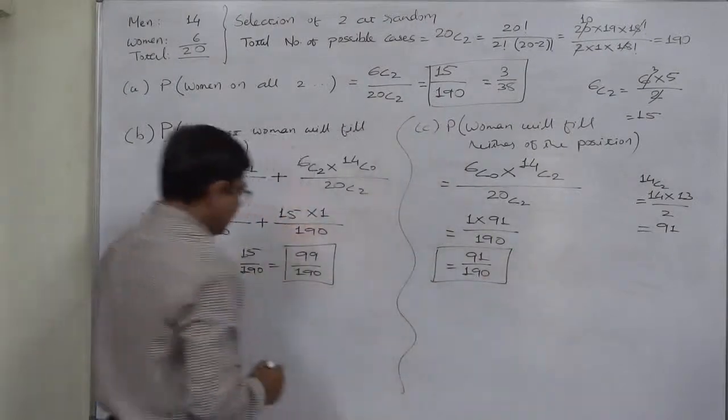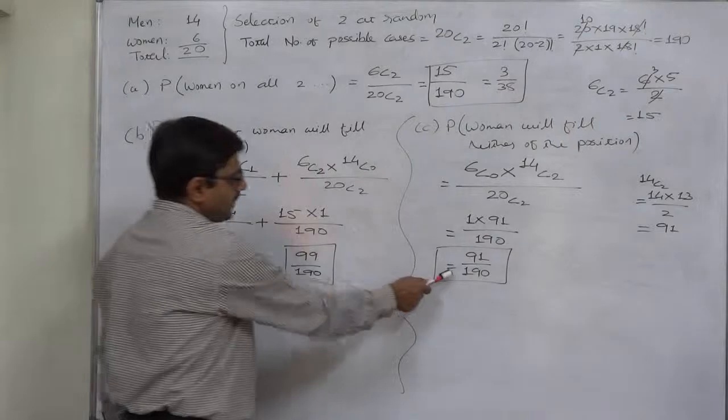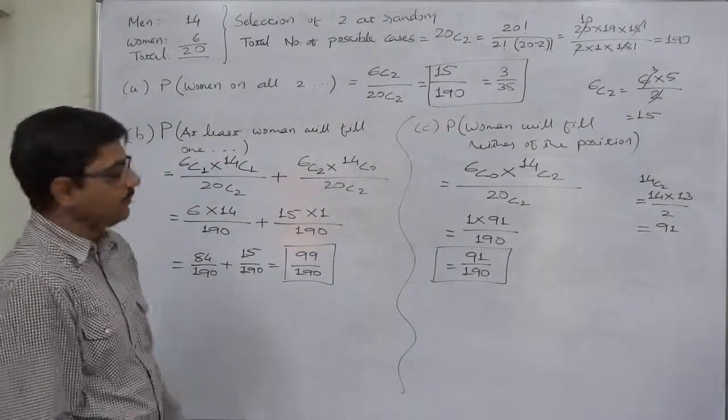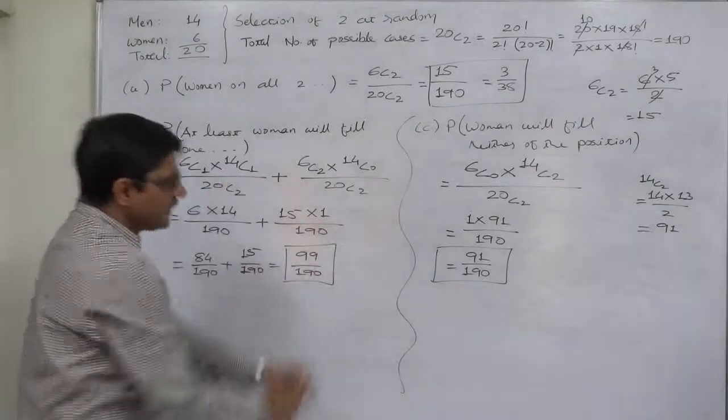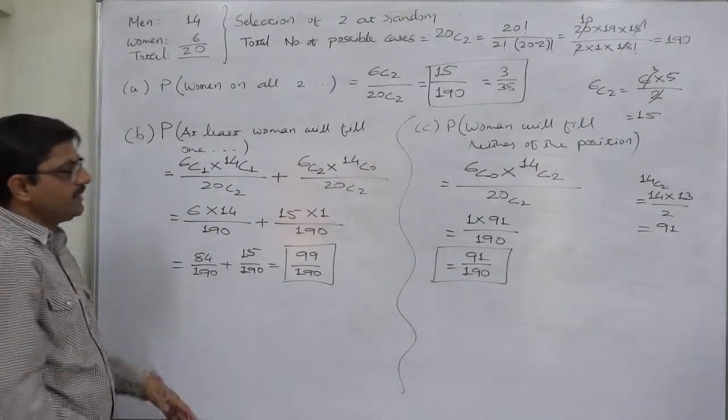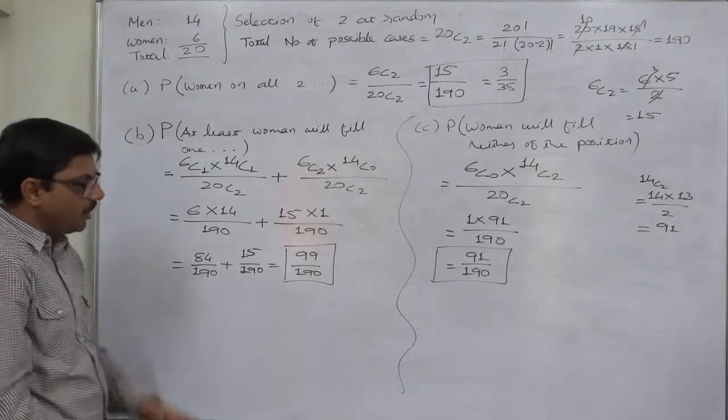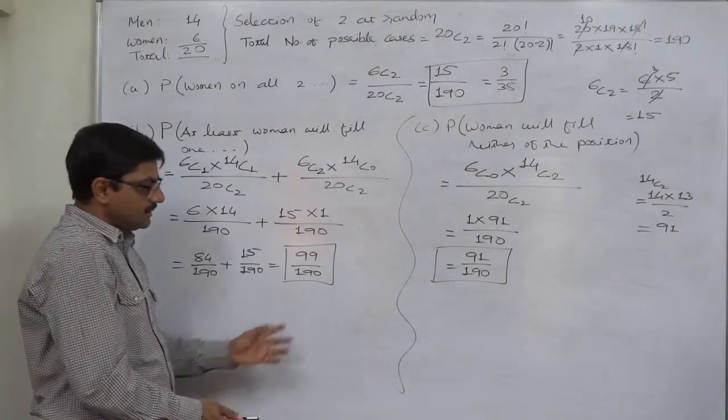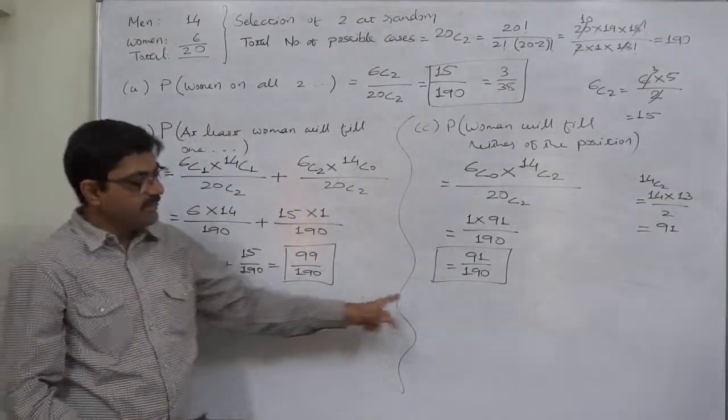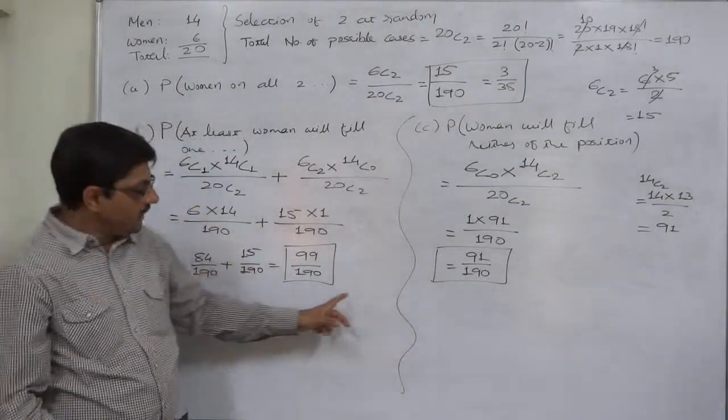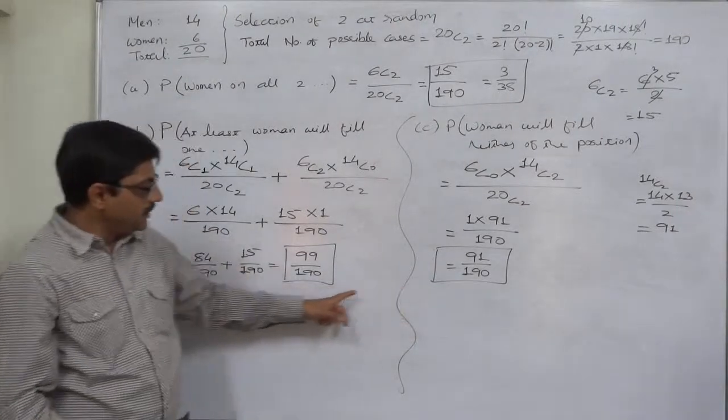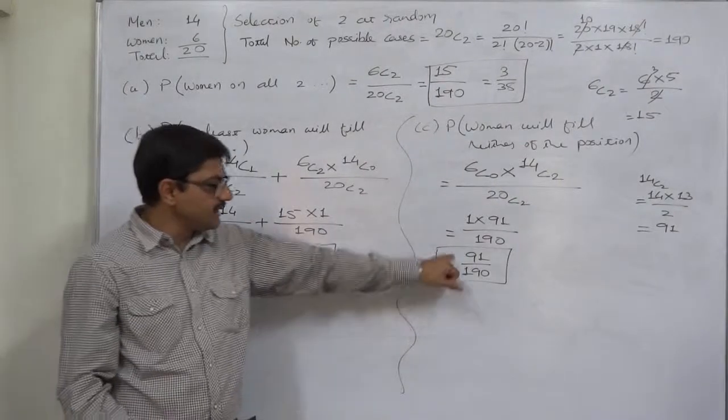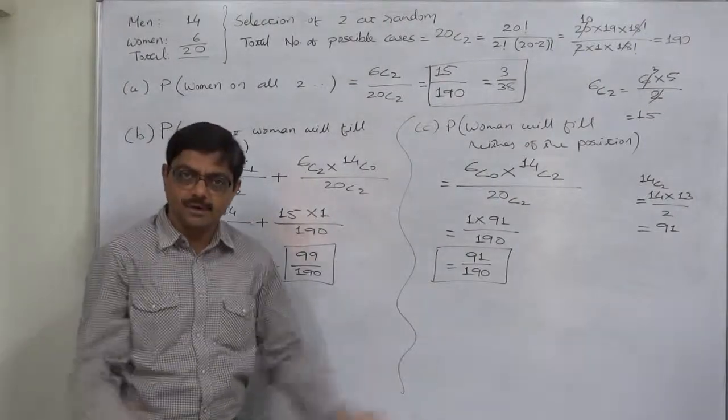We can see that the summation of these two probabilities comes to 1. 99 plus 91, 190. Because these two are complement events. Either no woman will be selected or at least one woman will be selected. So the probability of two complement events is always, rather total of probabilities of two complement events is always 1. 99 by 190 plus 91 by 190, the total comes to 1.